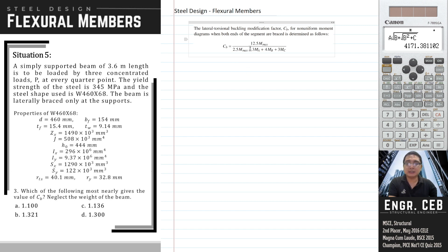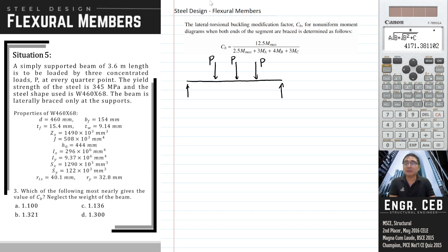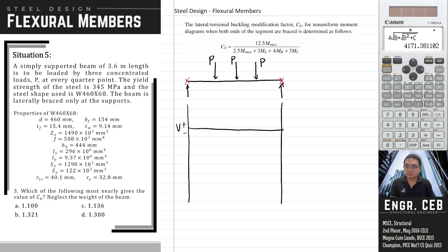This is the formula for Cb. The moments Mmax, MA, MB, and MC are the moments solved within the beam. We have a simply supported beam subjected to concentrated loads P at the quarter points, and the lateral supports are located only at the supports. MA, MB, and MC are the moments at the quarter points of the unbraced segment.